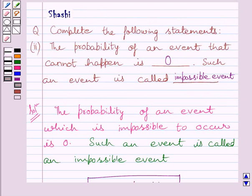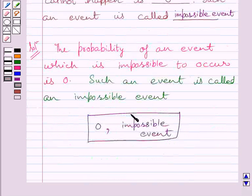So we get the probability of an event that cannot happen is zero and such an event is called impossible event. This is our required answer.